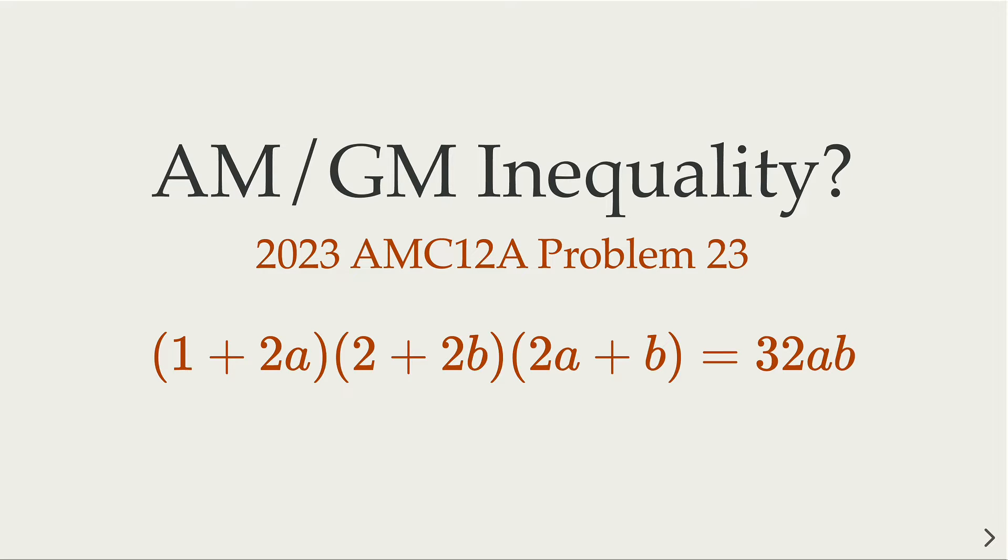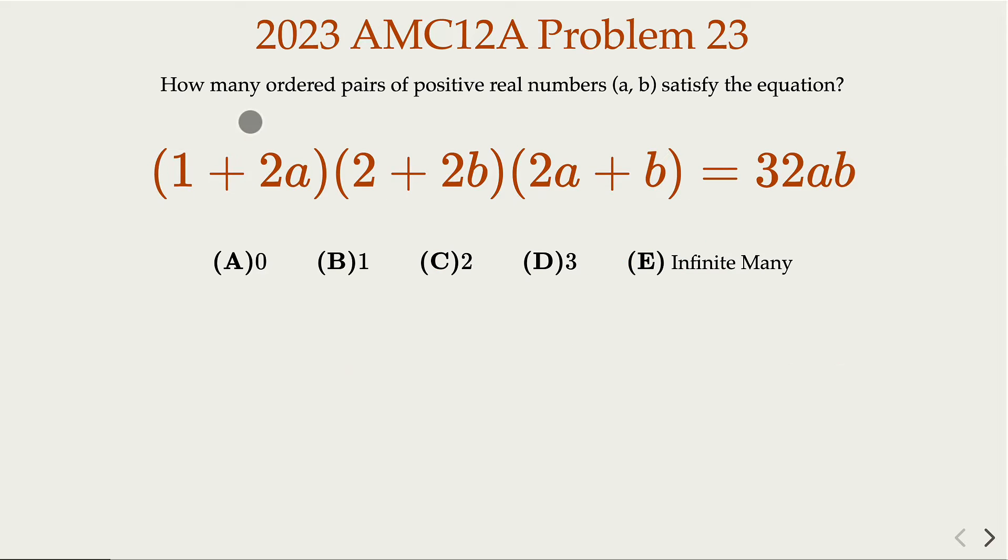We look at the recent 2023 AMC 12, problem 23. It is an equation in two variables, but it is a hidden problem for AM-GM inequality. The problem asks how many ordered pairs of positive real numbers satisfy this equation.